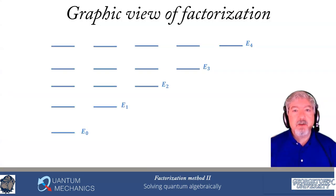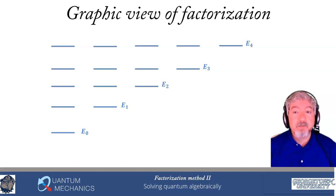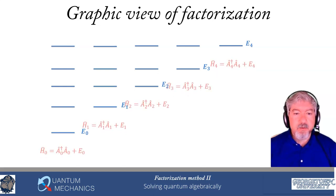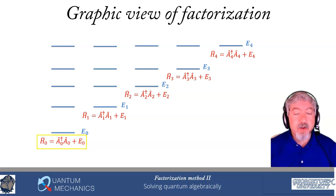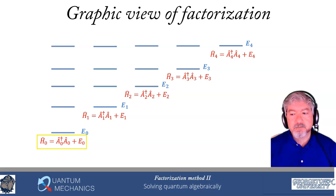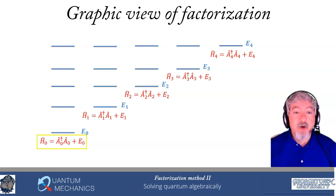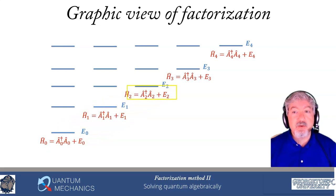Let me remind you graphically how we solve these problems. We start off with a Hamiltonian H0 — that's the Hamiltonian we're interested in solving. We use a construction that gives us a set of auxiliary Hamiltonians that we call H1, H2, H3, and so on.